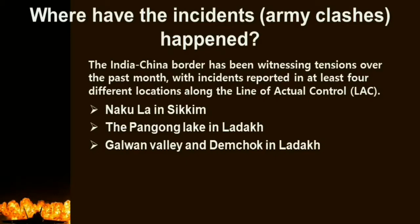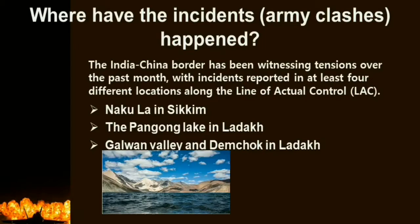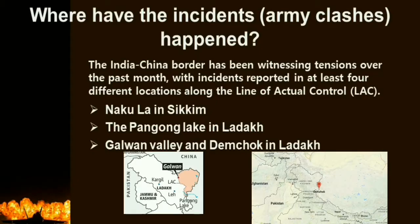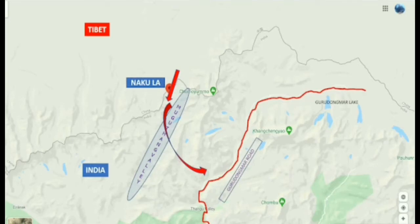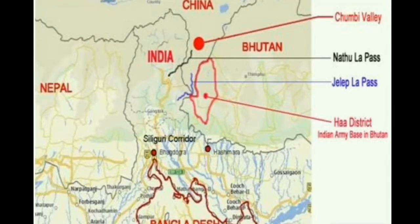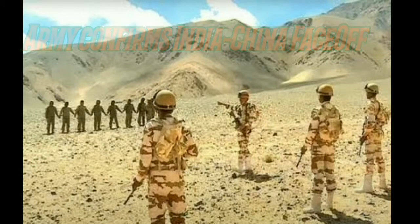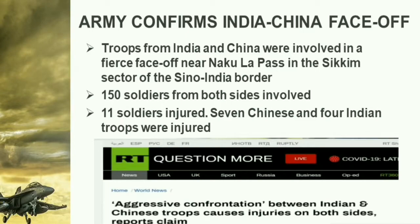Where have the army clashes happened? The India-China border has been witnessing tensions with incidents reported in at least four different locations along the Line of Actual Control: Nakula in Sikkim, Pangong Lake in Ladakh, Galwan Valley, and Demchok in Ladakh. Nakula is a pass at a height of more than 5,000 meters above mean sea level in the state of Sikkim. It is located ahead of the Muguthang or Cholamu source of the river Teesta. Other passes in Sikkim include Nathu La Pass and Jelep La Pass.